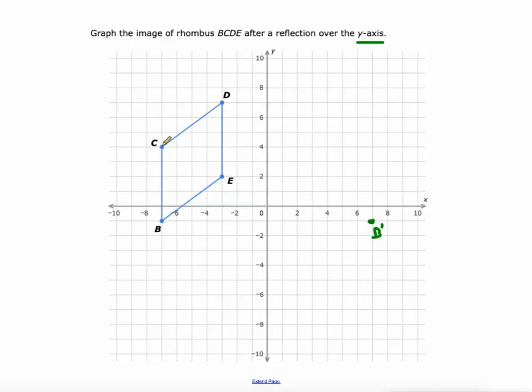c is at negative 7. Comes straight across, it's going to be a positive 7. d is at negative 3. Comes straight across, it's going to be a positive 3.